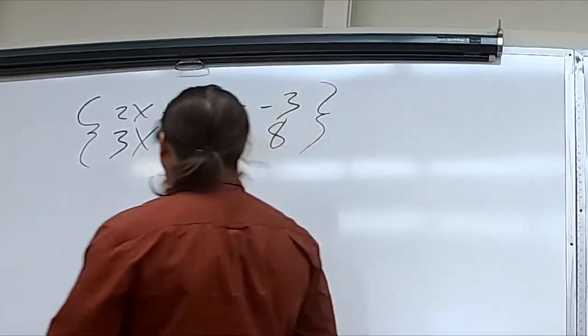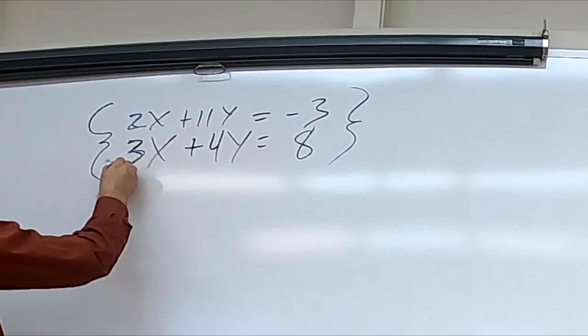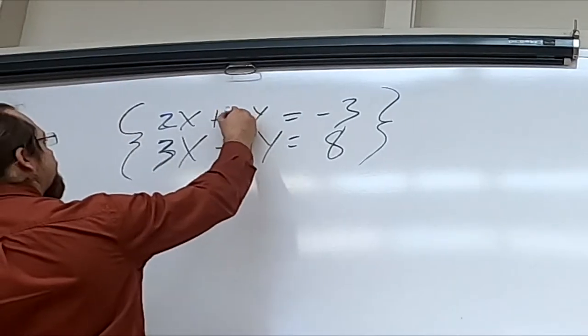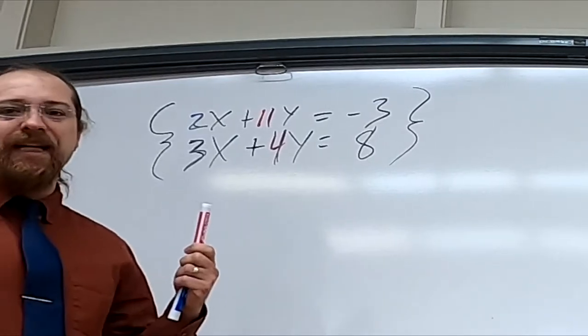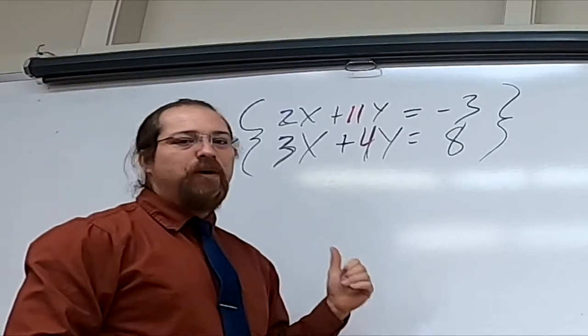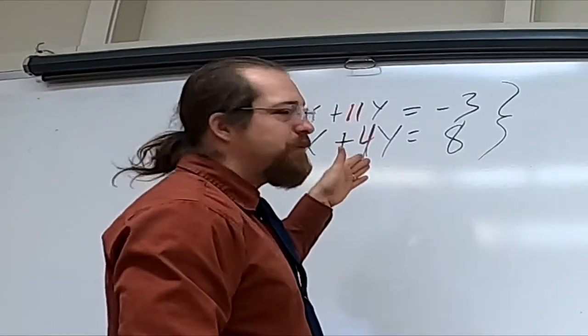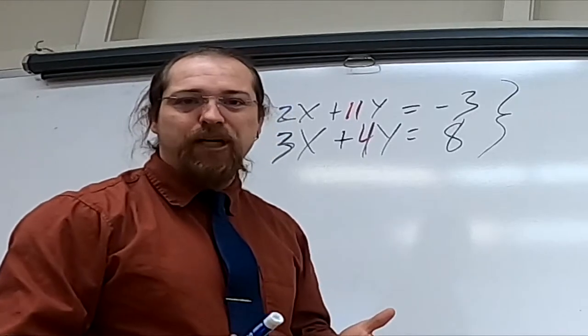Alright so looking at this, the key thing here is I've got this 2 and this 3, right? And I've got this 11 and this 4. Those numbers should stand out to you. Okay so what would I have to multiply the top equation by in order to make them opposites? What would I have to multiply the bottom equation by to make them opposites?